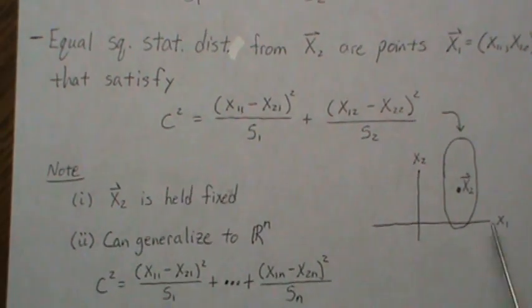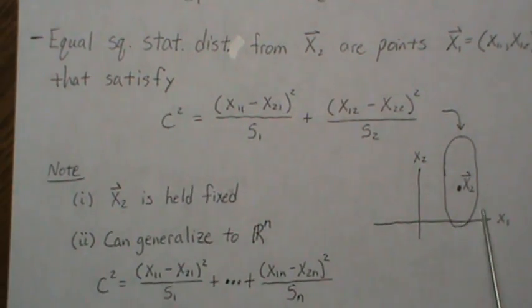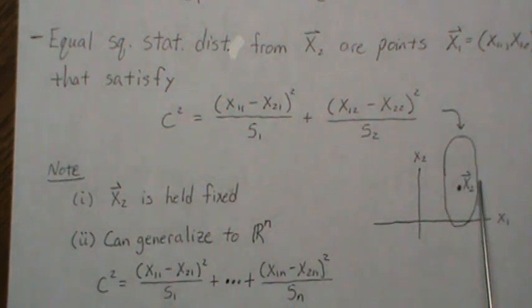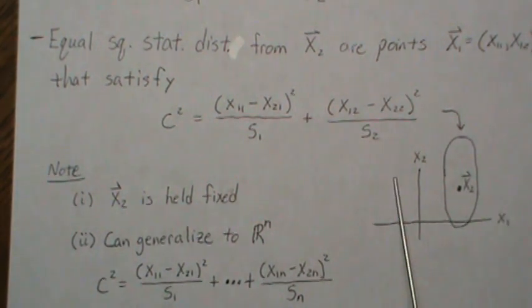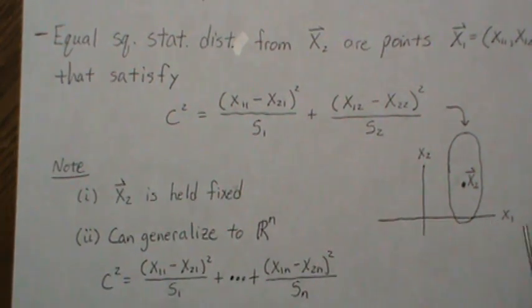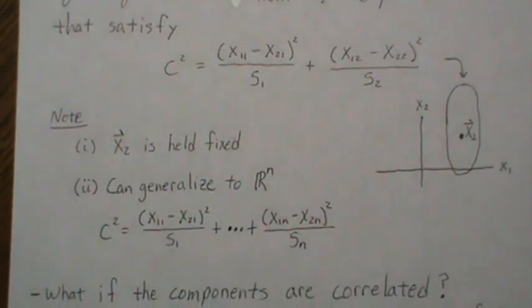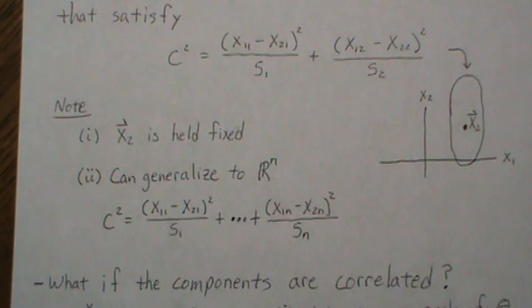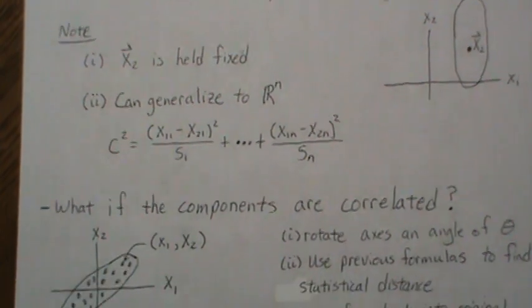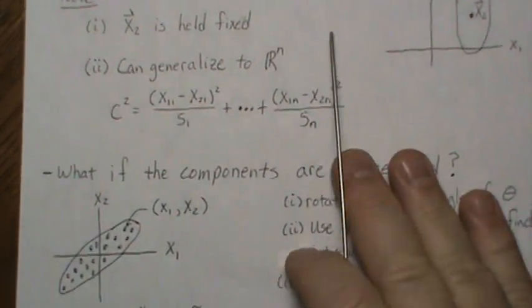But notice that when I drew these ellipses each time, it's kind of either elongating up or I drew one that was elongated this way earlier. And those, if you think about it, those are the data points don't really have a correlation associated with them. So what if the components are correlated? Does that change how we think about statistical distance? And the answer is yes.